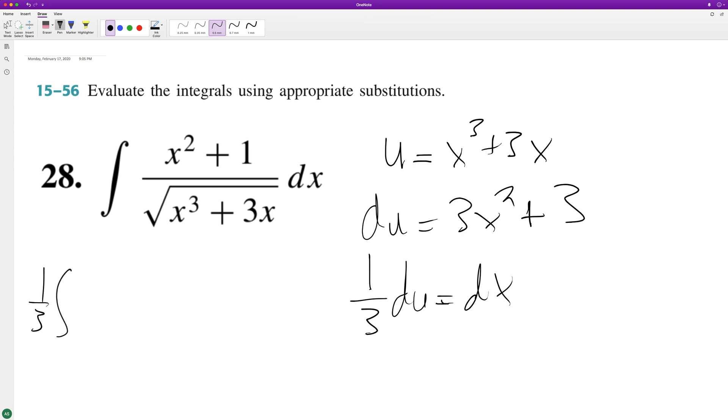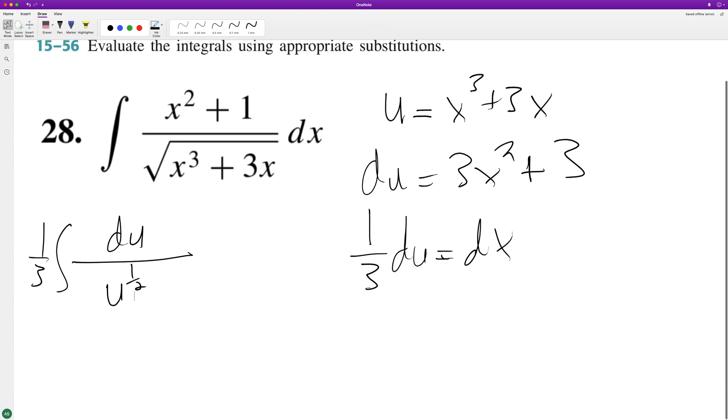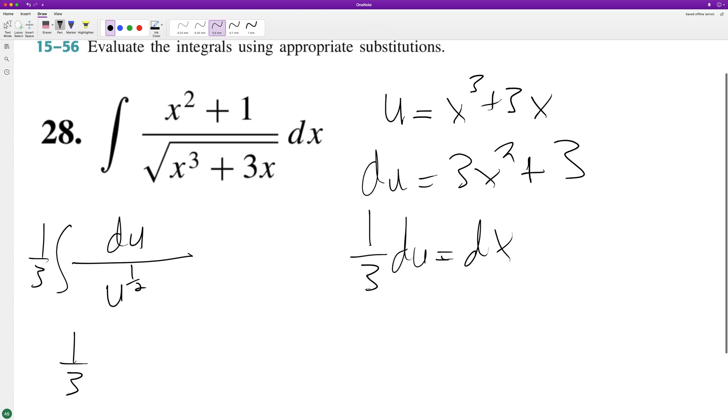Okay, so we have one third du over u raised to one half, or we can restate this as one third u raised to negative one half du.